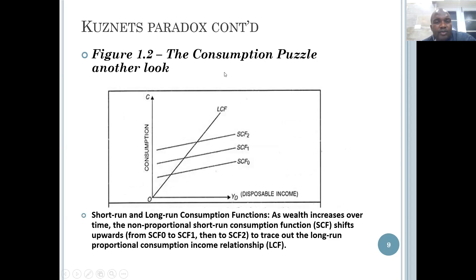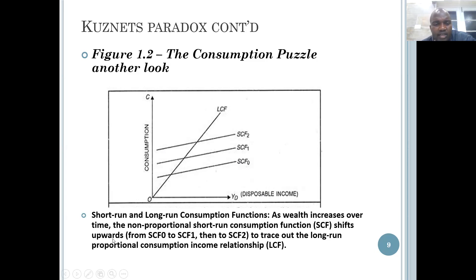In figure 1.2 — the consumption puzzle examined from another perspective — with aggregate consumption on the vertical axis and disposable national income YT on the horizontal axis, we have one long-run consumption function and a series of short-run consumption functions, from SF-0 up to SF-2. As wealth increases over time, the non-proportional short-run consumption function shifts upward from SF-0 to SF-1 and then to SF-2, tracing out the long-run proportional consumption income relationship.